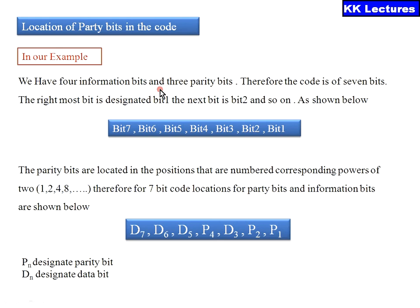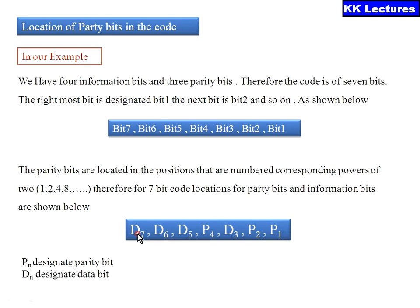Now, where to place these parity bits? In our example with 4 information bits and 3 parity bits, the total code is 7 bits — bit 1 to bit 7. The parity bits are located at positions corresponding to powers of 2: position 1 (2^0), position 2 (2^1), and position 4 (2^2). So position 1 is a parity bit, position 2 is a parity bit, position 3 is a data bit, position 4 is a parity bit, and positions 5, 6, 7 are data bits. Position 8 (2^3) would be the next parity bit for larger codes.